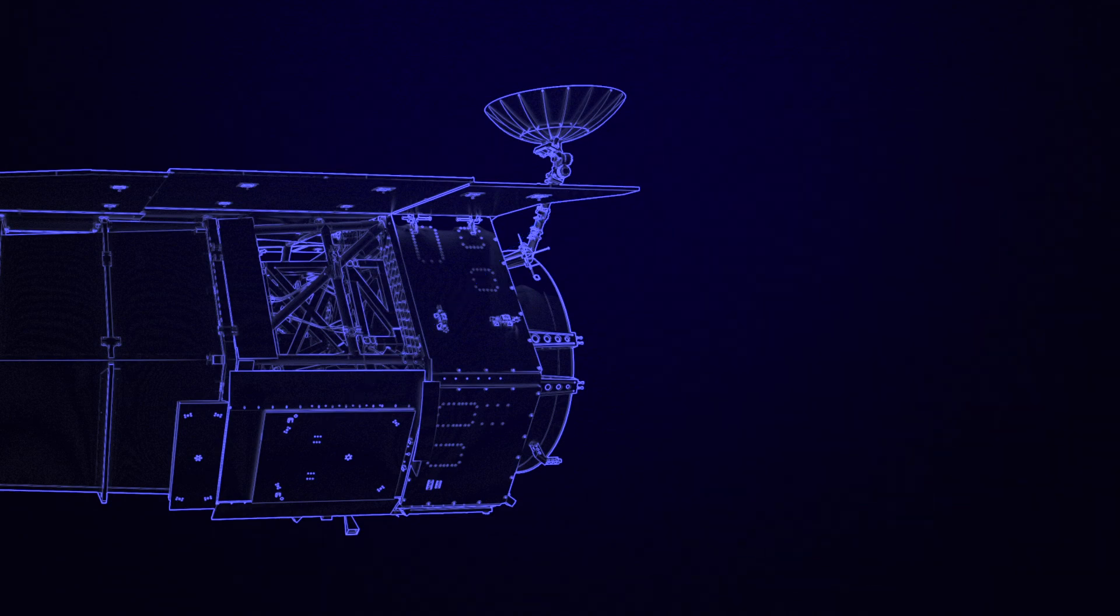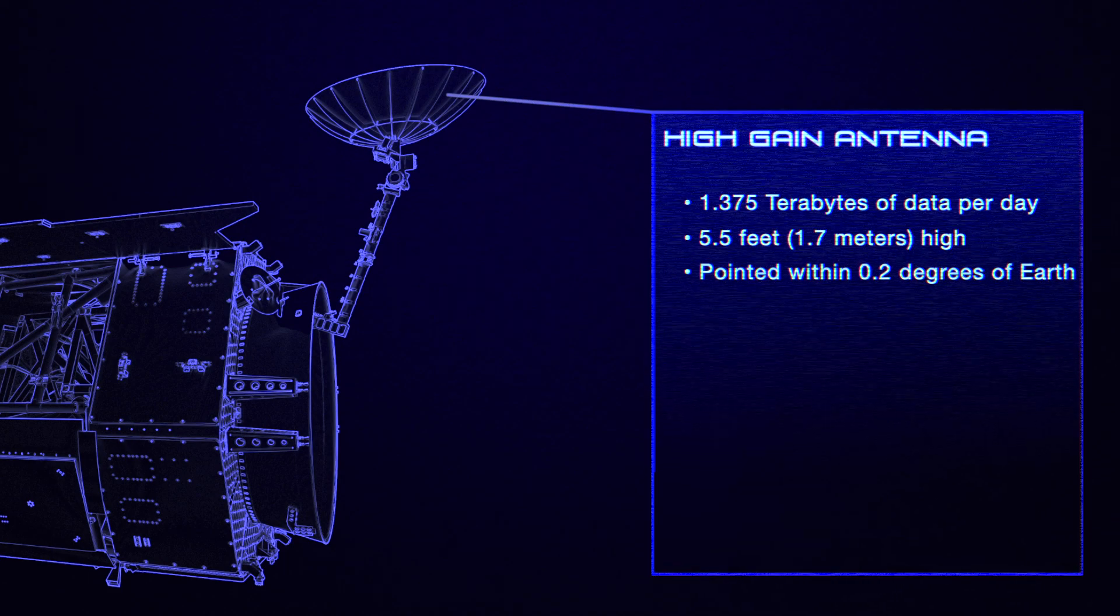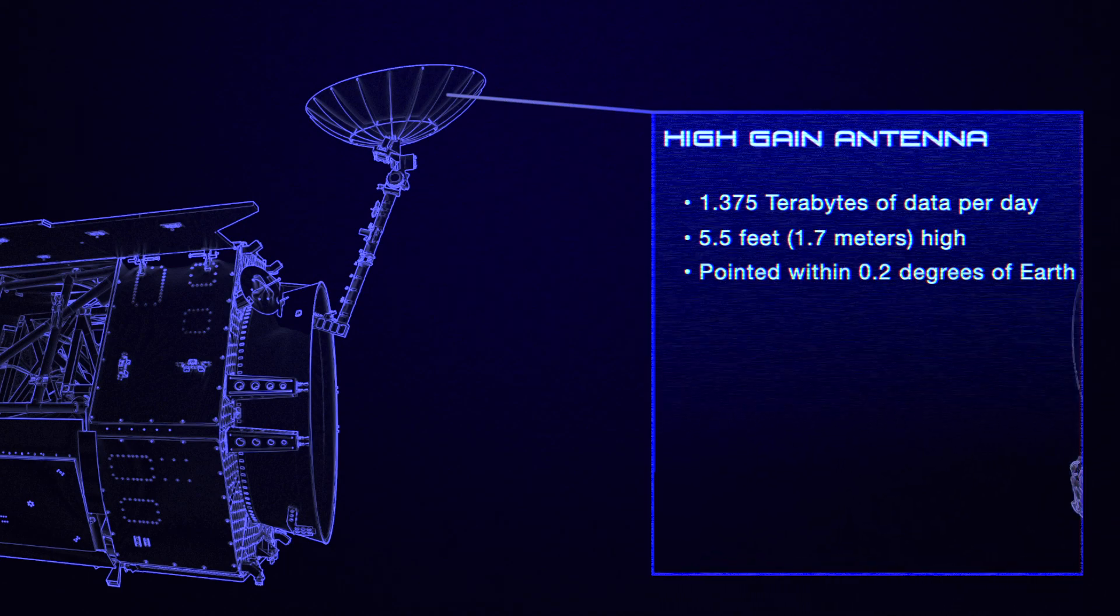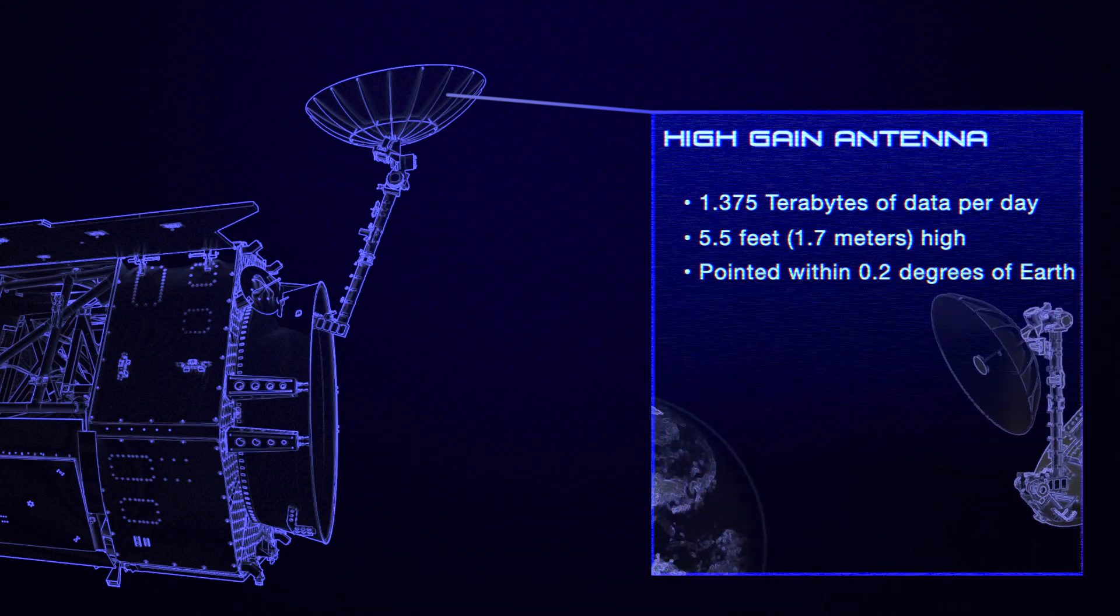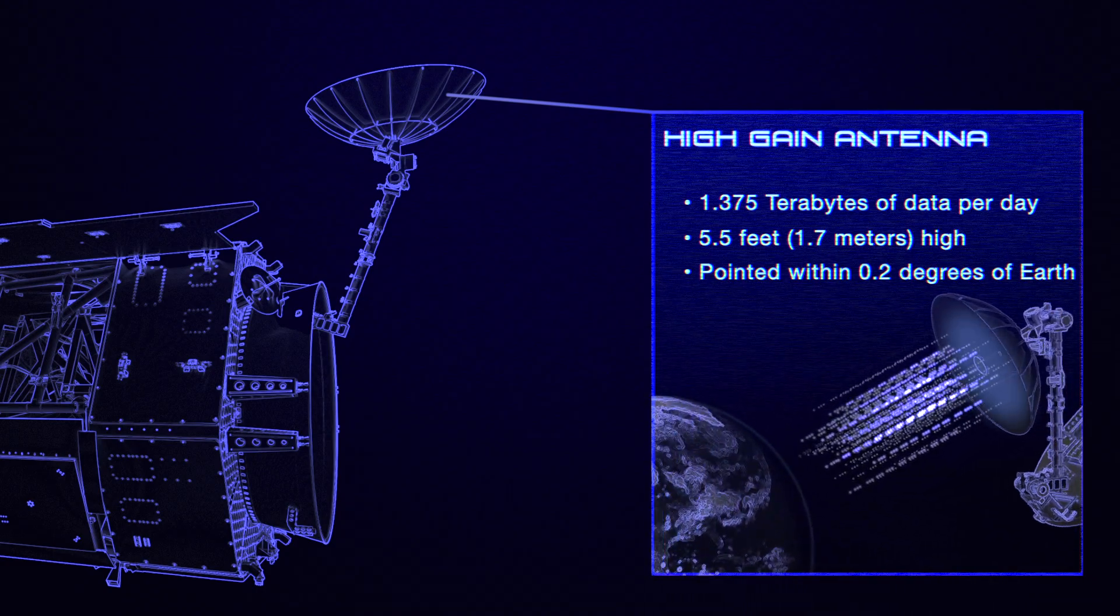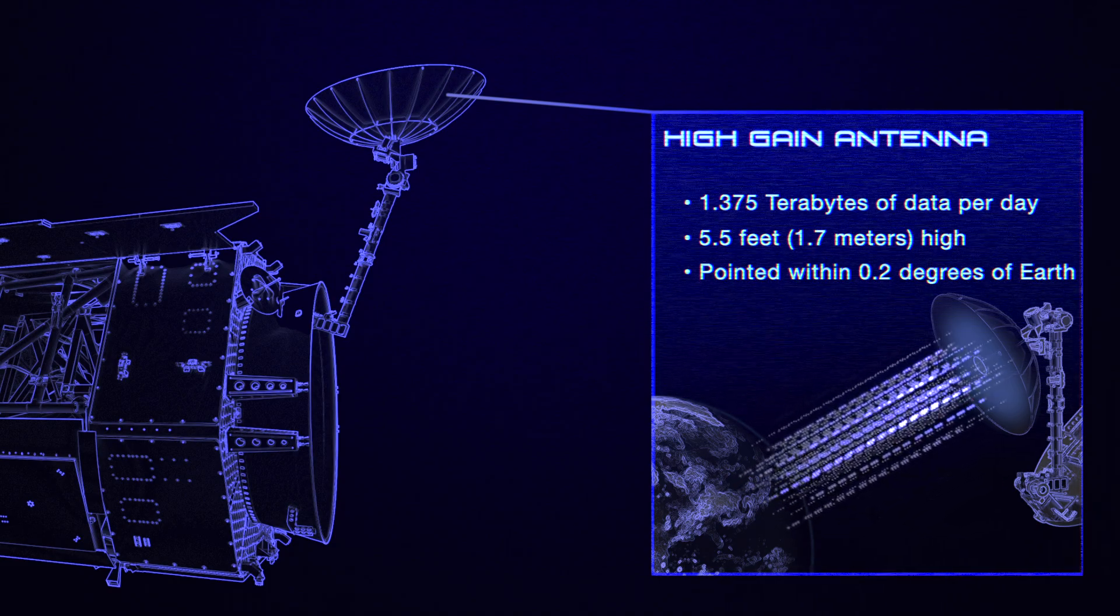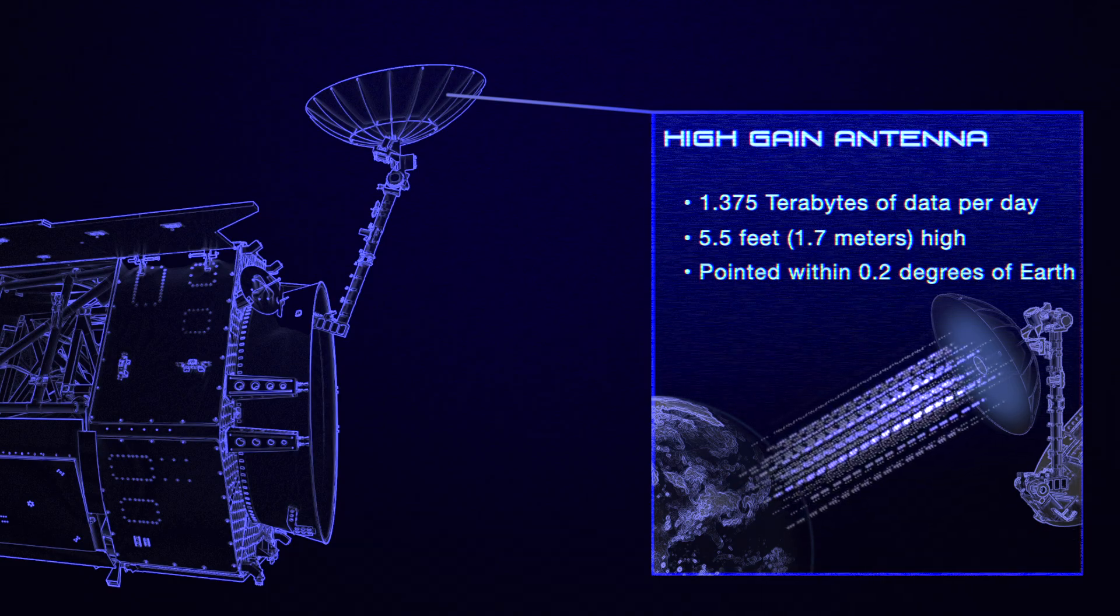At WFIRST's back is its primary means of communication with Earth, the high-gain antenna. This antenna will be responsible for sending nearly 1.4 terabytes of data to ground stations every day. That's the equivalent of 460 hours worth of streaming video.